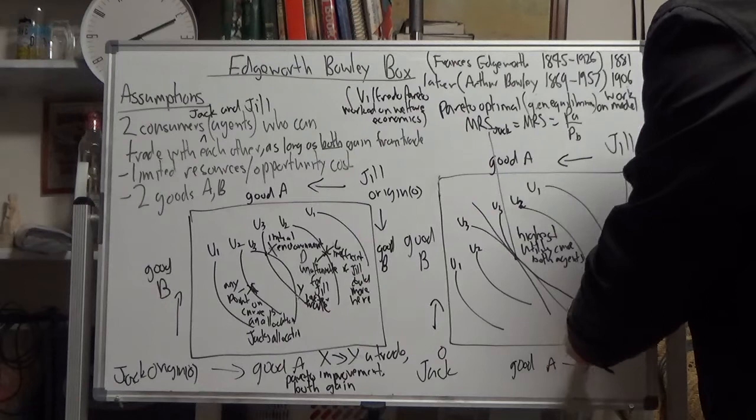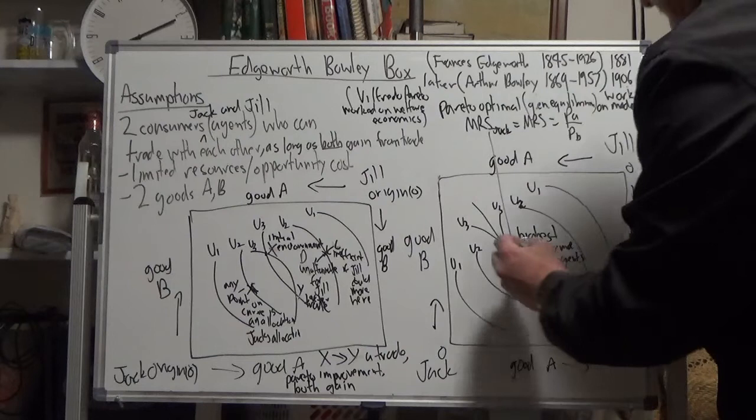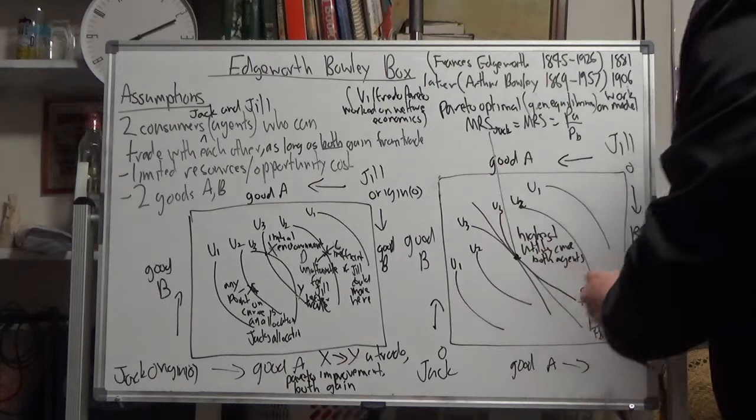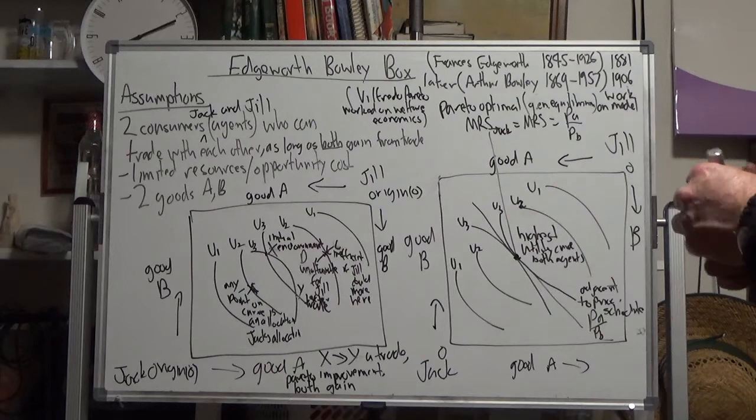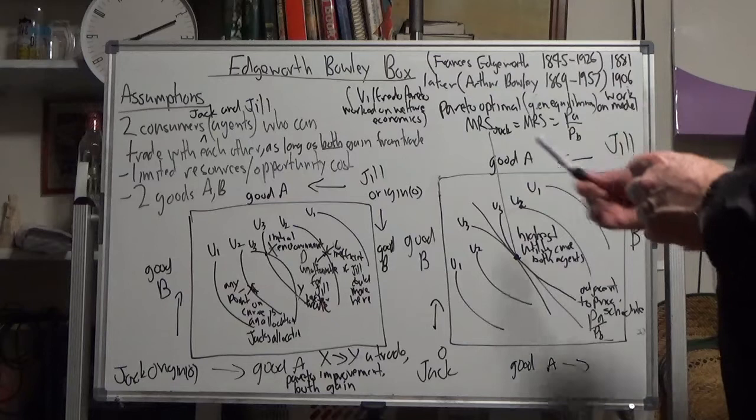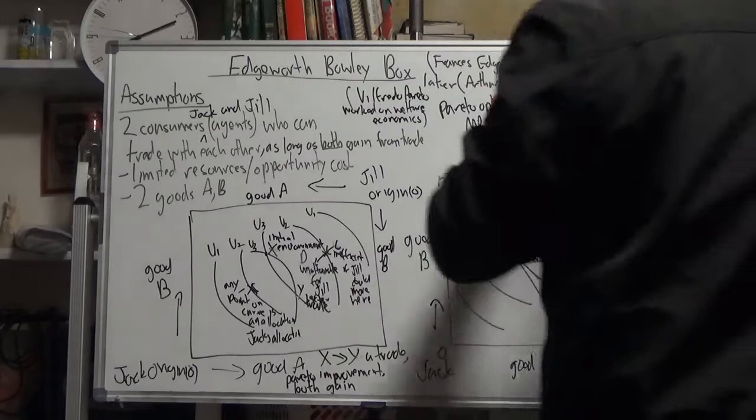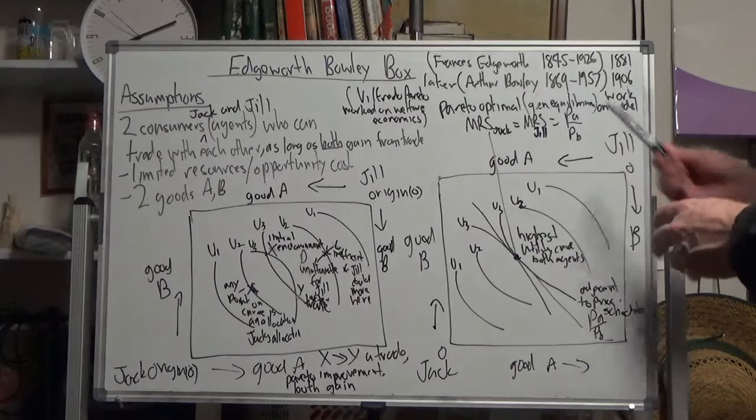Which is also adjacent to the price schedule, PA over PB. That tangency between both their indifference curves, Jack and Jill, and the price ratio, that point there is termed Pareto optimality or Pareto efficiency. At that point, the marginal rate of substitution of Jack is equal to the marginal rate of substitution of Jill, which is also equal to the price ratio, PA over PB.